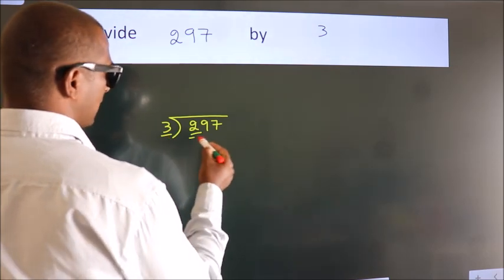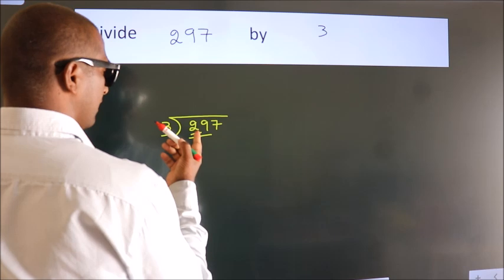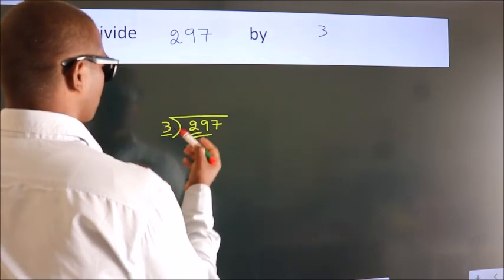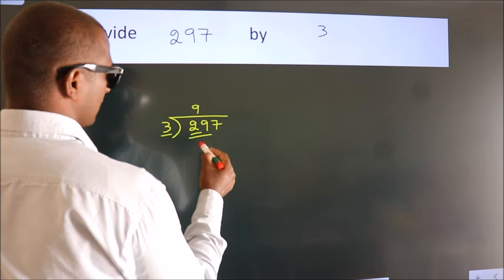So we should take 2 numbers, 29. A number close to 29 in the 3 table is 3 nines, 27.